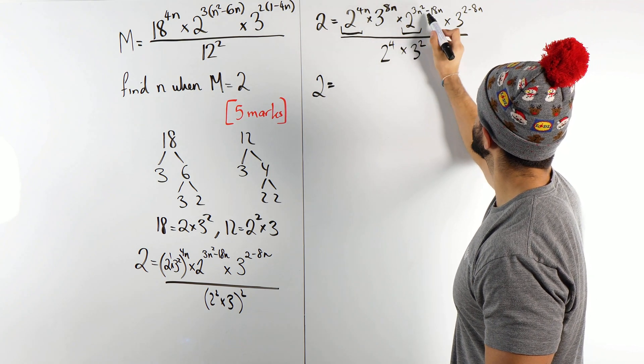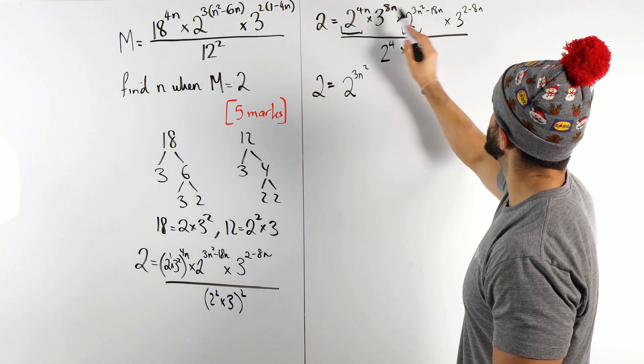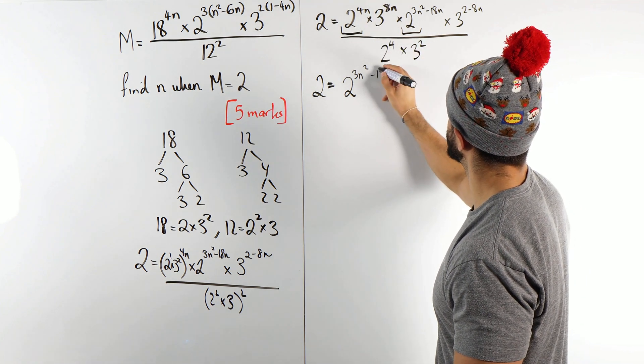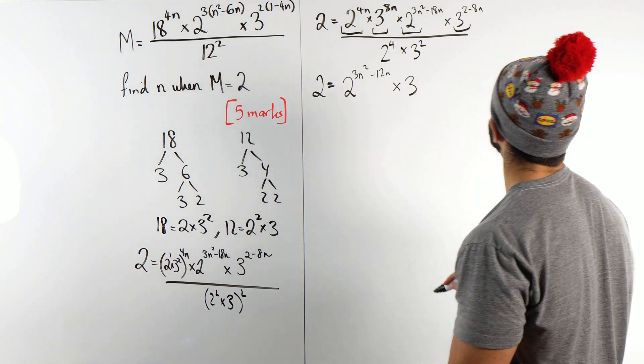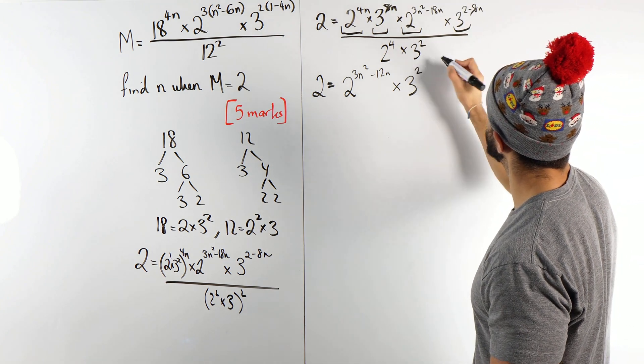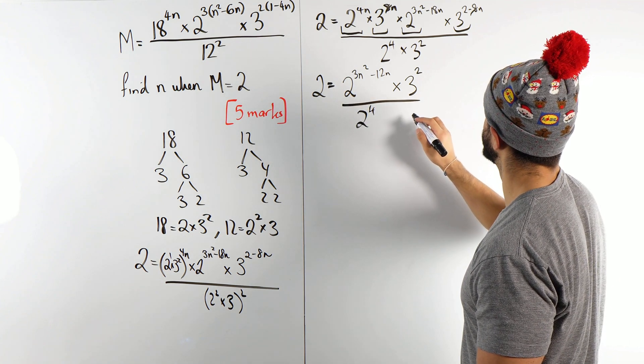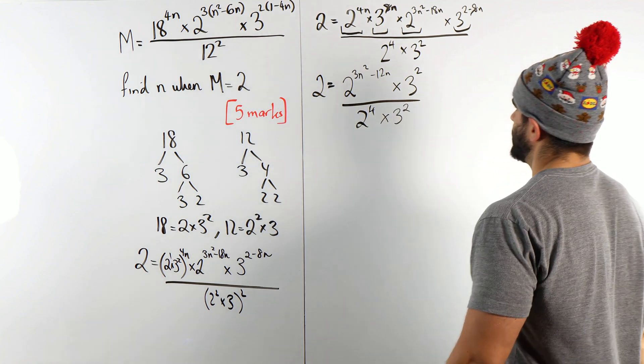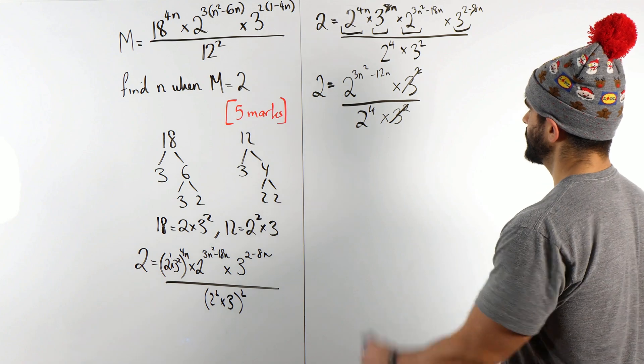4n plus this, so we have 3n squared, so we have 2 to the power of 3n squared. Then we have 4n minus 18n, because remember you're adding them, plus minus is just minus. 4n minus 18n is minus 12n. Then we have times 3. Now we're going to do the same thing with the base 3s. We're going to add the powers. The 8n's cancel. You're just left with 3 squared, and that's going to cancel the 3 squared in the denominator.